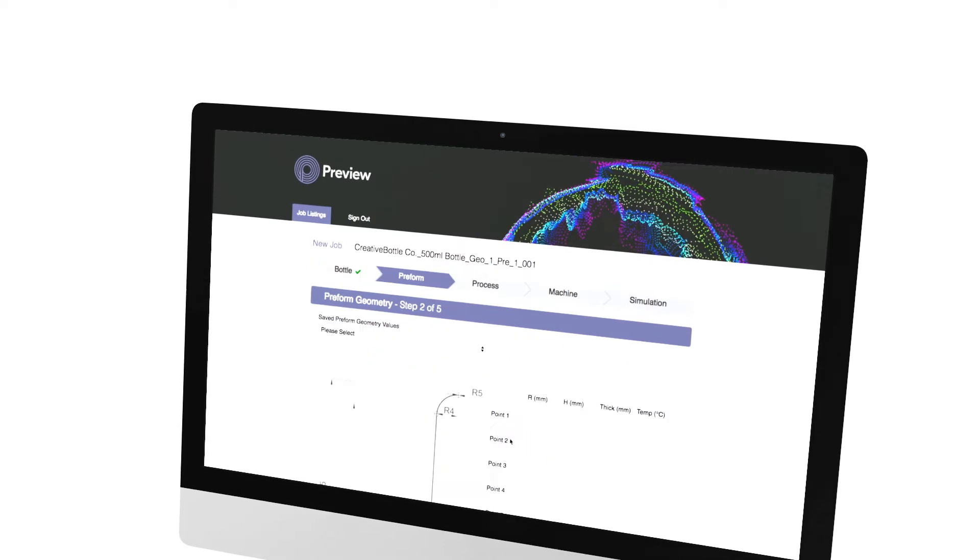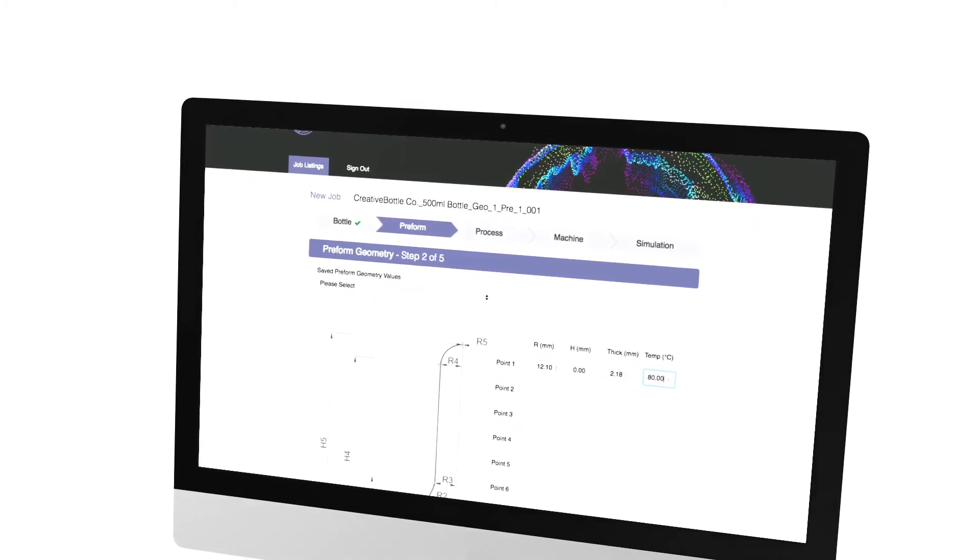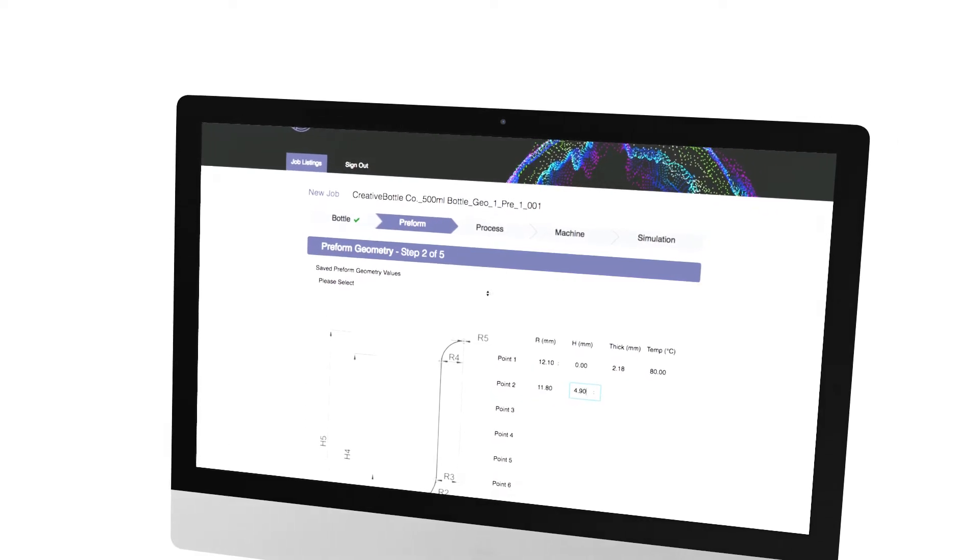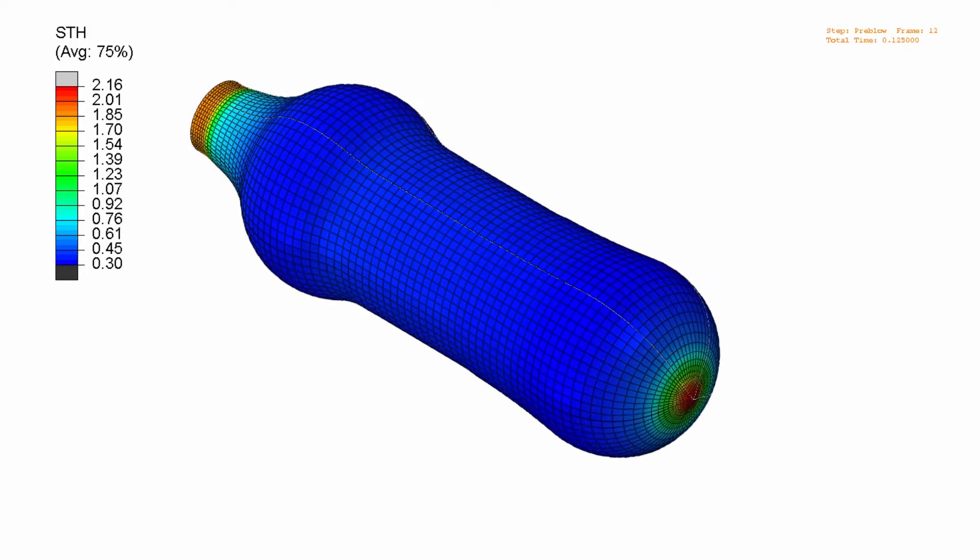Engineers simply upload the CAD files of the preform and bottle, enter the process settings, and submit the job. When the job is complete, they receive a notification that enables them to view the simulation of the process and assess the thickness distribution of the virtual container.